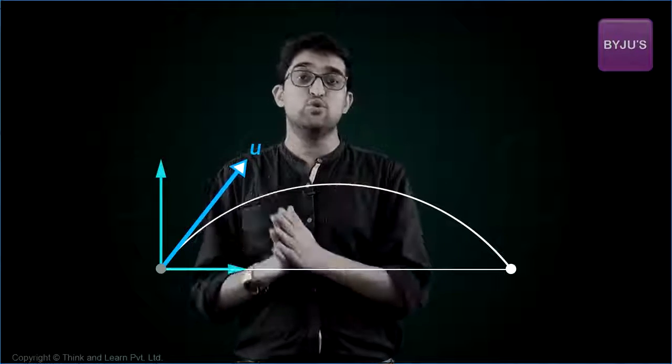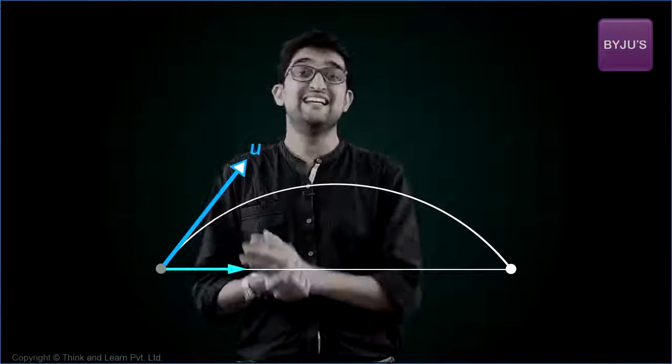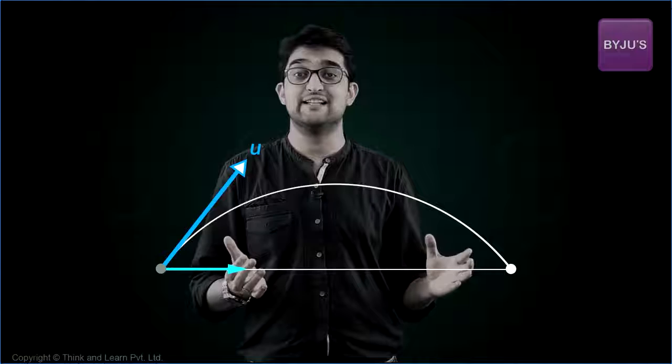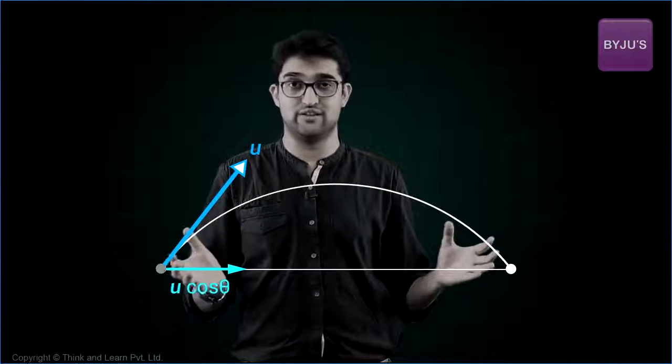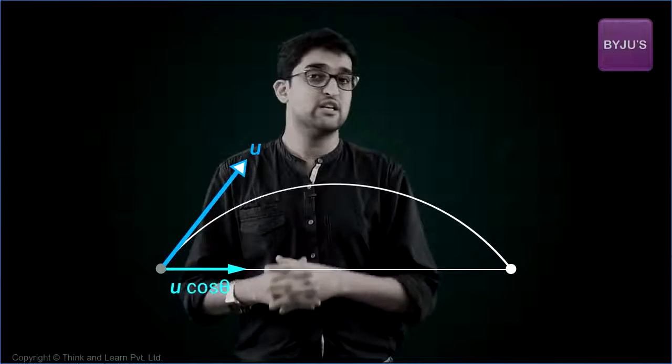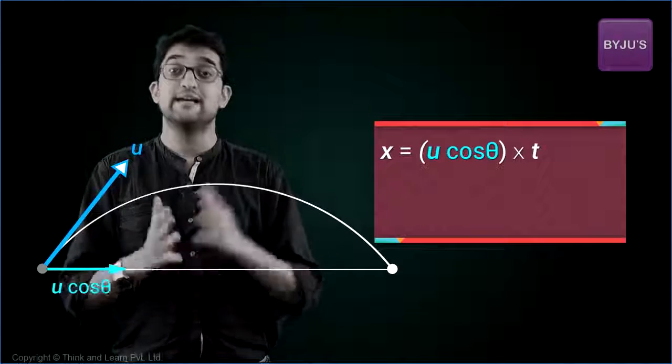So in this scenario, let's look at the horizontal motion. What is happening here? The initial velocity along the horizontal direction is u cos theta. As it is very obvious, there is no acceleration along the horizontal direction. So it's a uniform motion. So what will be the equation? Yes, x is equal to u cos theta into t.